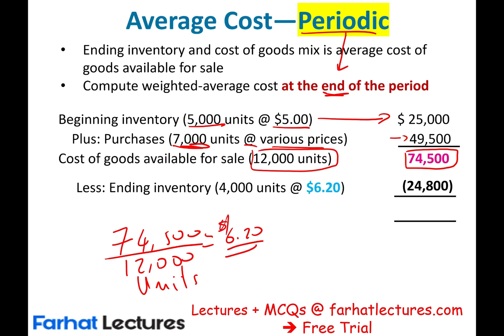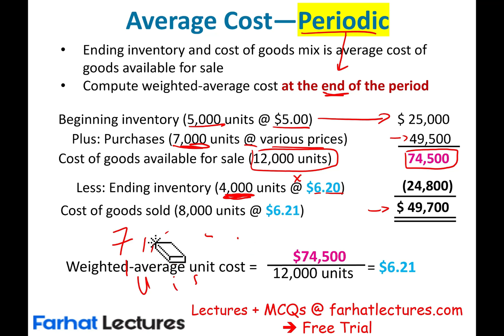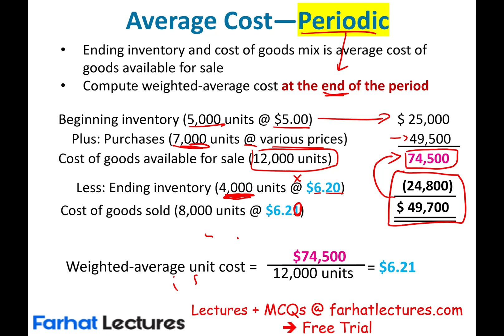If I have 4,000 units left, I multiply by $6.20 for ending inventory. For the 8,000 units sold, the cost is approximately $6.20 or $6.21 per unit — it's just rounding. If I add the two amounts together, they equal $74,500. So the weighted average unit cost is $6.20. It should be $6.21 to make it exactly equal to $74,500 depending on how you round, but the concept is the average cost periodic method.